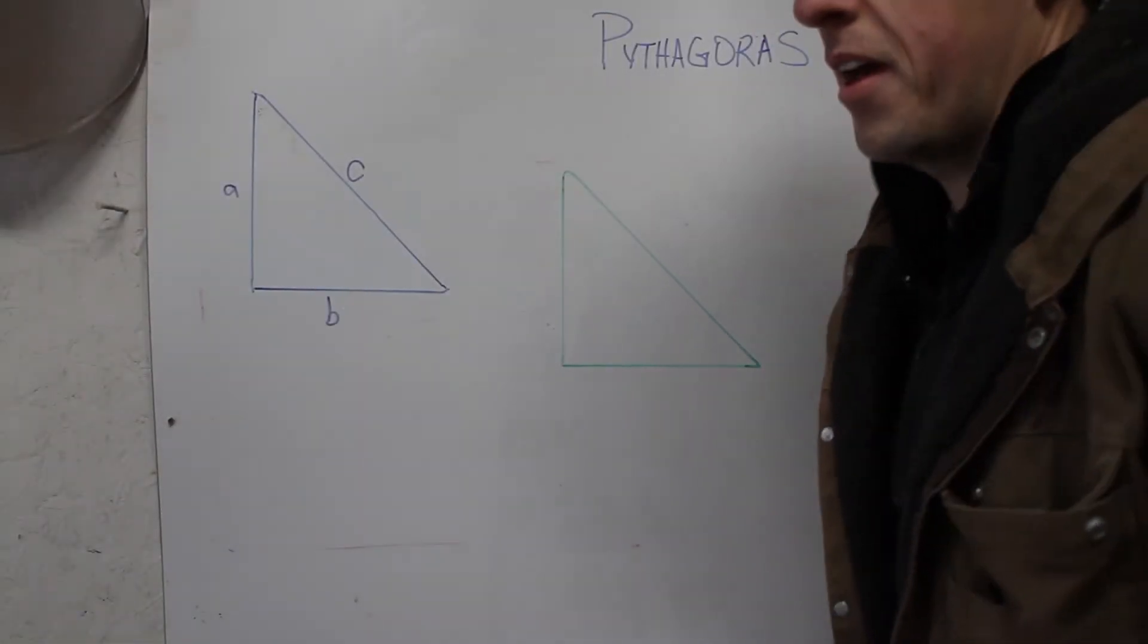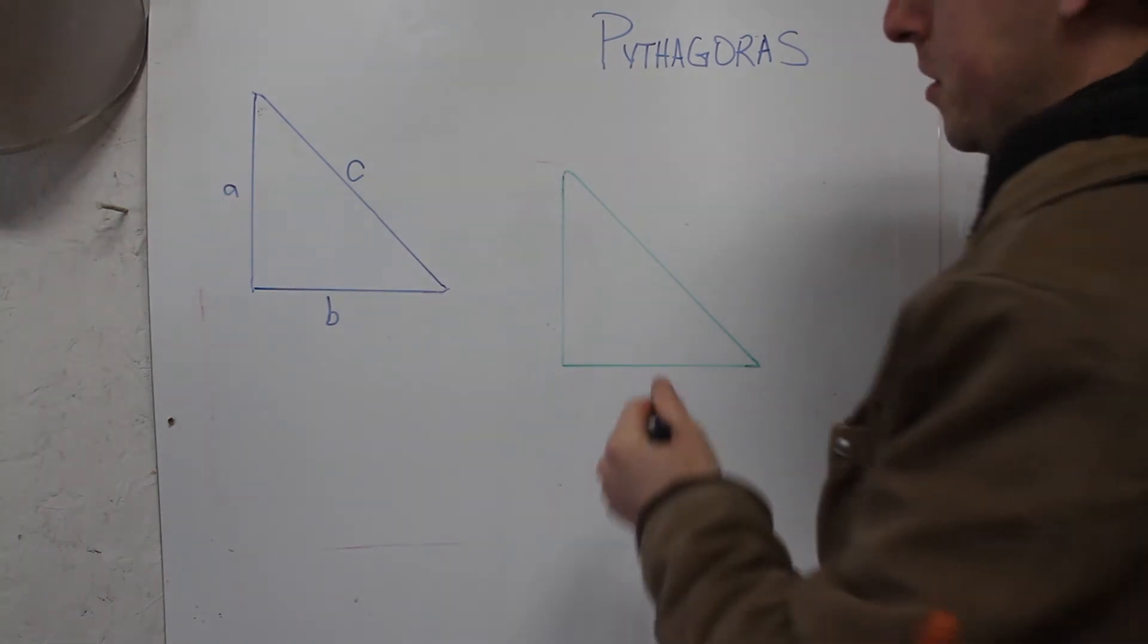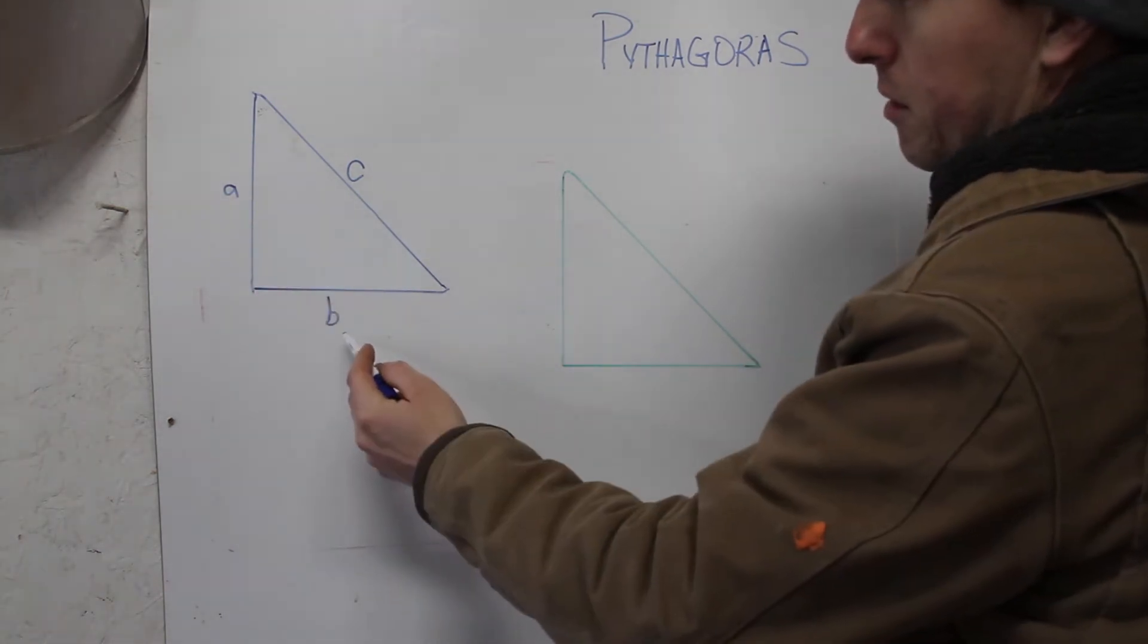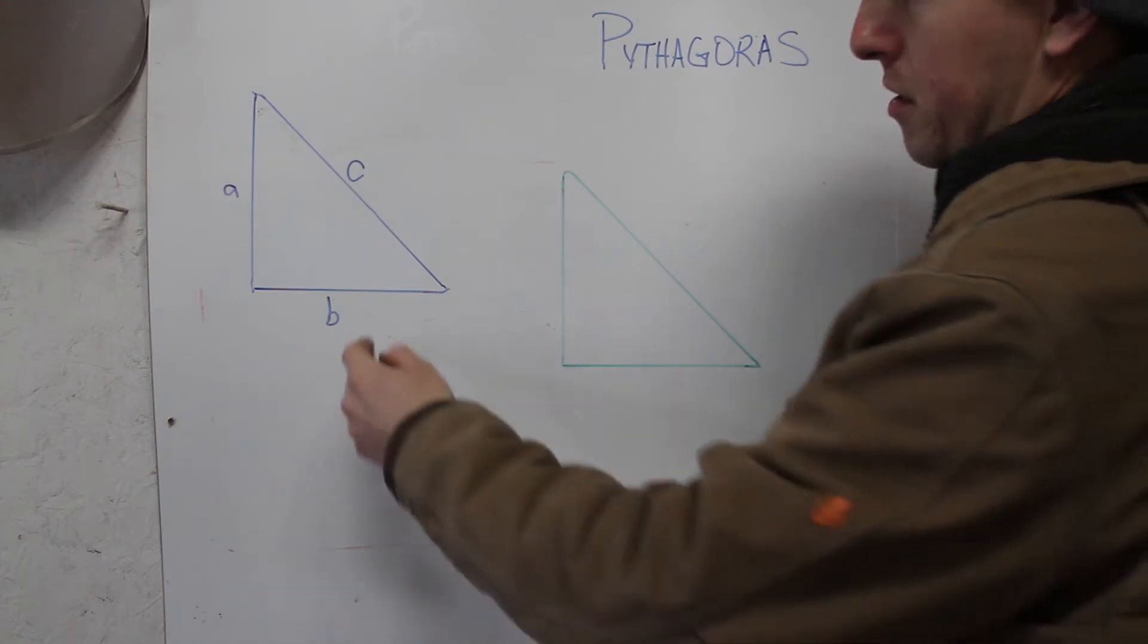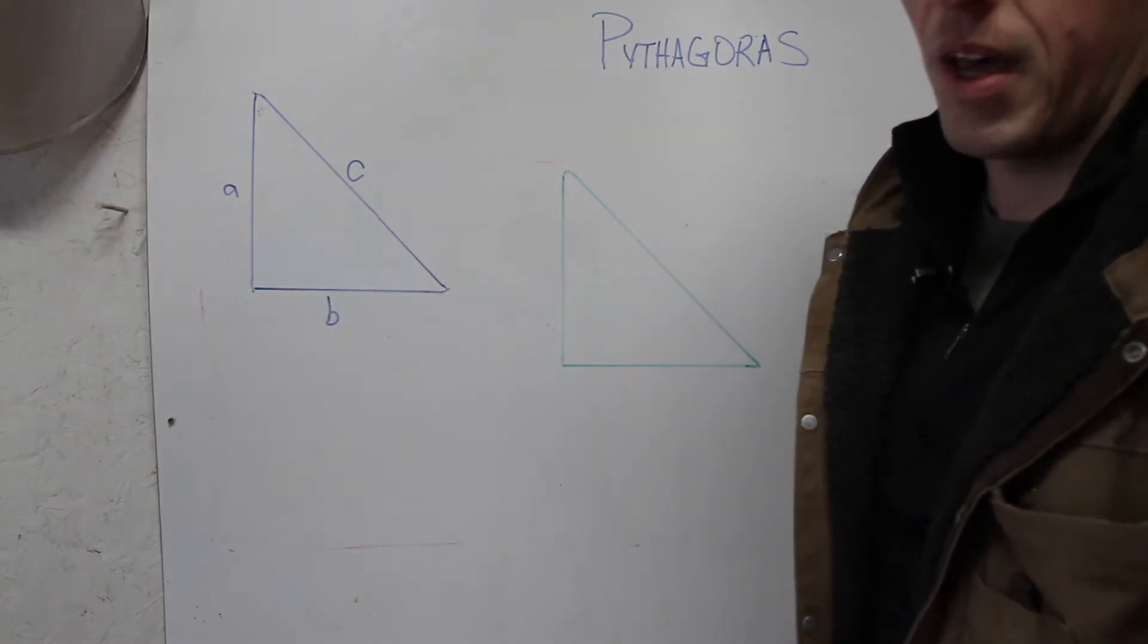So when we're working with the Pythagoras theorem, side C is generally always going to be the hypotenuse. A can be up here, B can be down here, it doesn't really matter - this can be A, this can be B, that's fine - but the key is that we always remember that C is the hypotenuse.